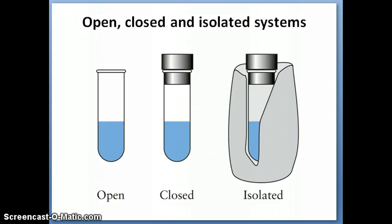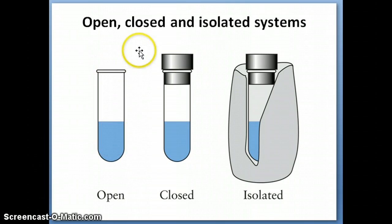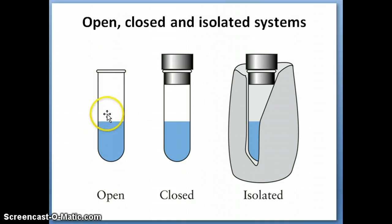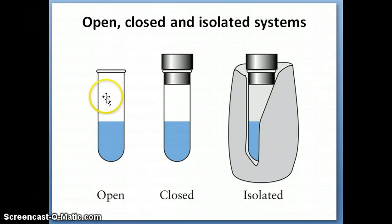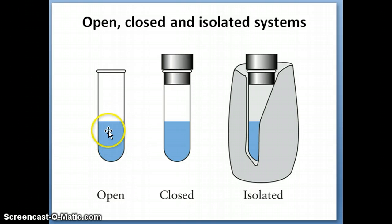It's also important to talk about the different types of systems you might see in chemistry. An open system would basically look something like a test tube with some reactions going on. An open system is one where energy is easily exchanged with the surroundings, and matter can also be exchanged between the surrounding and system. If it's open, some gases produced by this reaction can easily escape out into the atmosphere, so nothing prevents matter and energy both from going in and out of the system.